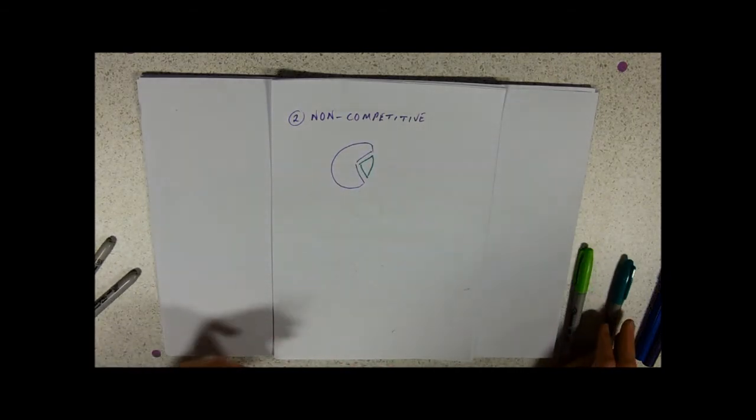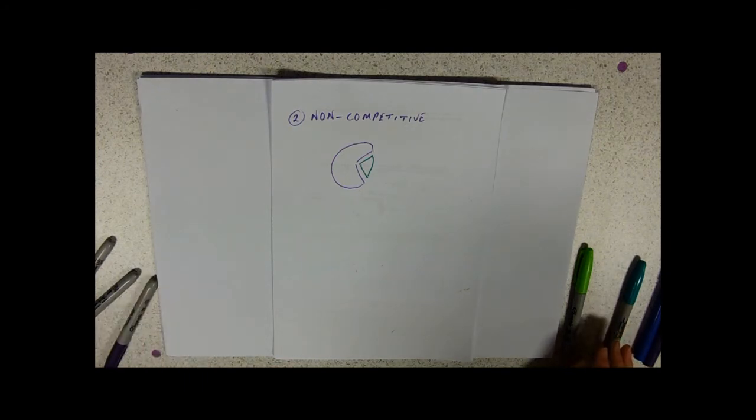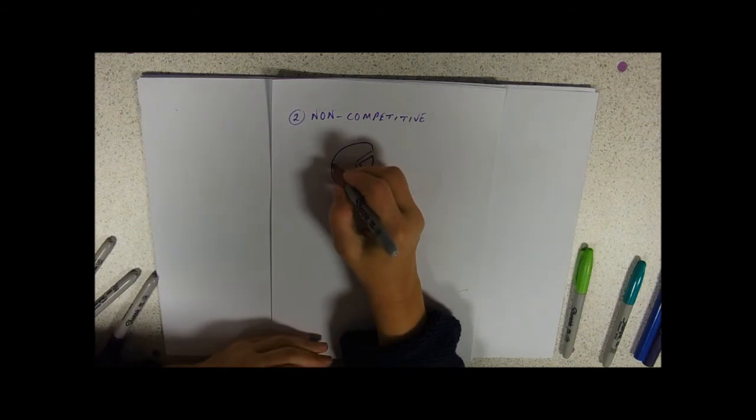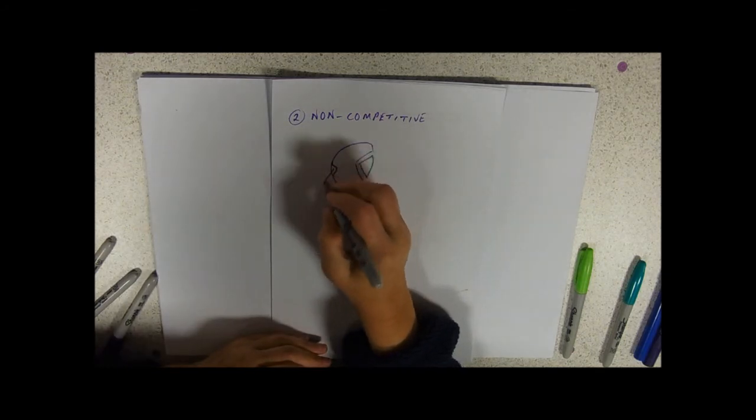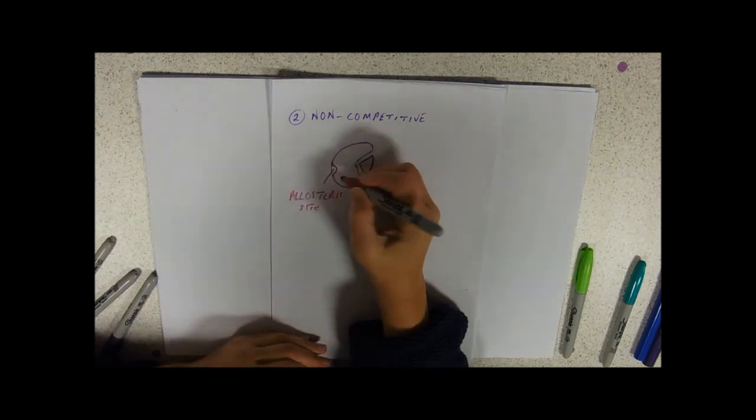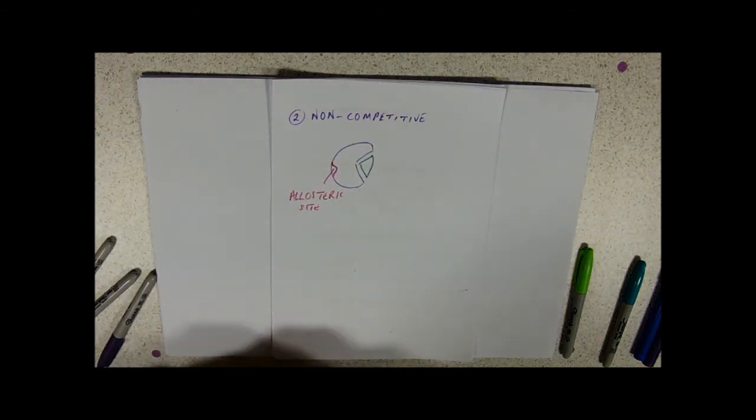But remember that an enzyme is a 3D kind of thing. So what we're saying is that there might be a little site somewhere here, perhaps, and we call this an allosteric site, don't ask me what that means, in which an inhibitor would bind.